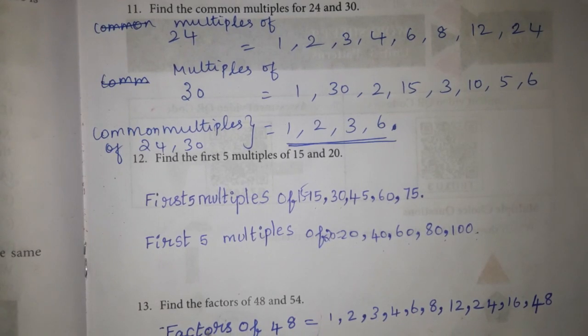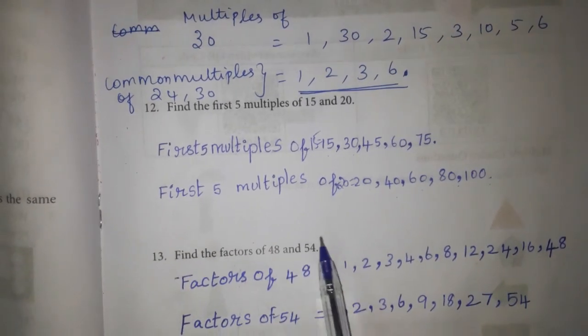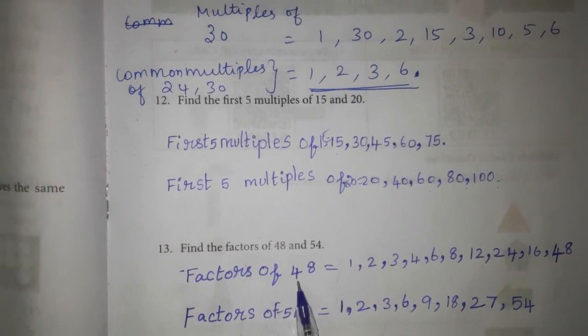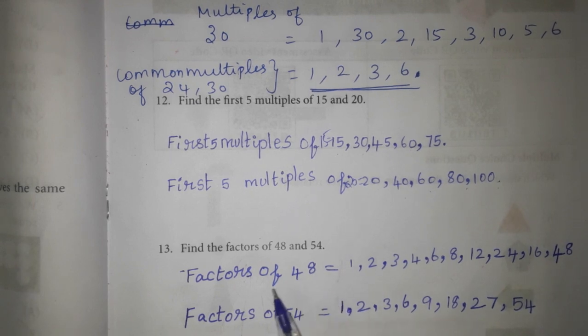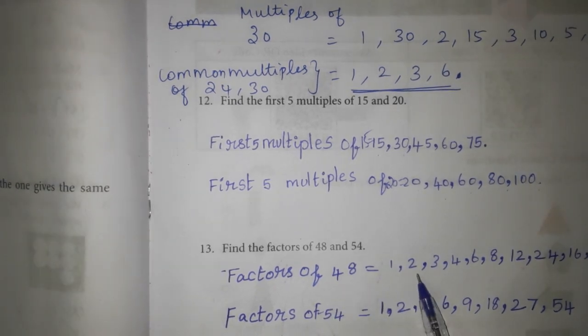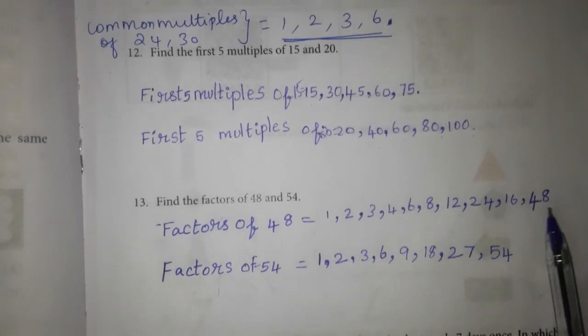Thirteenth one, find the factors of 48 and 54. Factors of 48, 48 when divided by the table are the factors. 1, 2, 3, 4, 6, 8, 12, 24, 16 and 48.